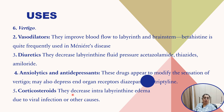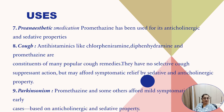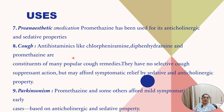Corticosteroids are also used in vertigo to decrease intra-labyrinthine edema due to viral infection or other causes. In pre-anesthetic medication, promethazine has been used for its anticholinergic and sedative properties. In cough, antihistaminics like chlorpheniramine, diphenhydramine, and promethazine are constituents of many popular cough remedies. They have no selective cough suppression action but afford symptomatic relief through their sedative and anticholinergic properties.